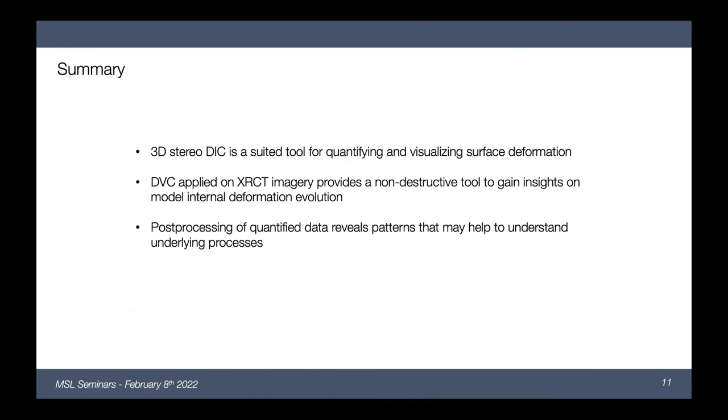So as a summary, we can say that we have these very nice tools, the digital image correlation for surface visualization, and we have the digital volume correlation to quantify and visualize deformation internally in the model. And if we combine those two methods, we get a really comprehensive image of how the deformation in our sandbox models evolve. And then last but not least, if you want to get more out of it, we can find ways to extract more data, which then eventually may help to understand these underlying processes.